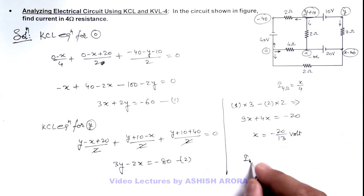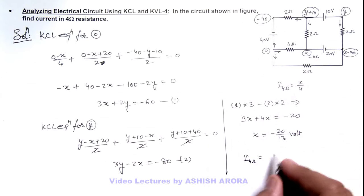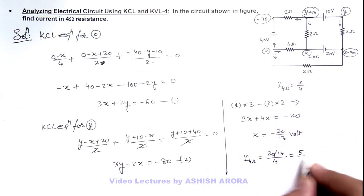So here current through this 4-ohm resistance in magnitude will be 20 by 13 divided by 4. That will be 5 by 13 ampere. That will be the answer to this problem.